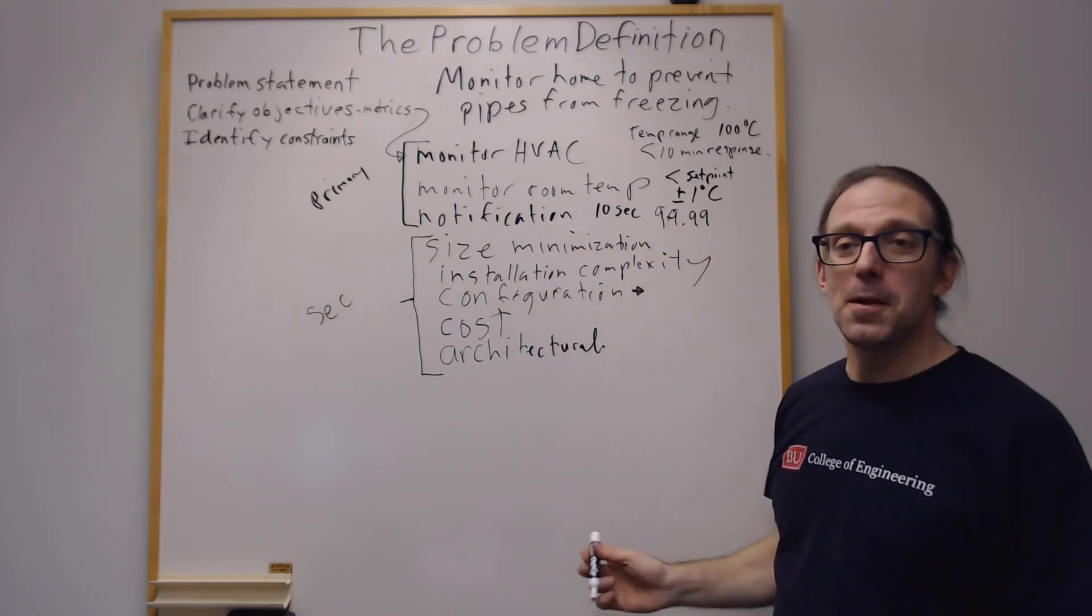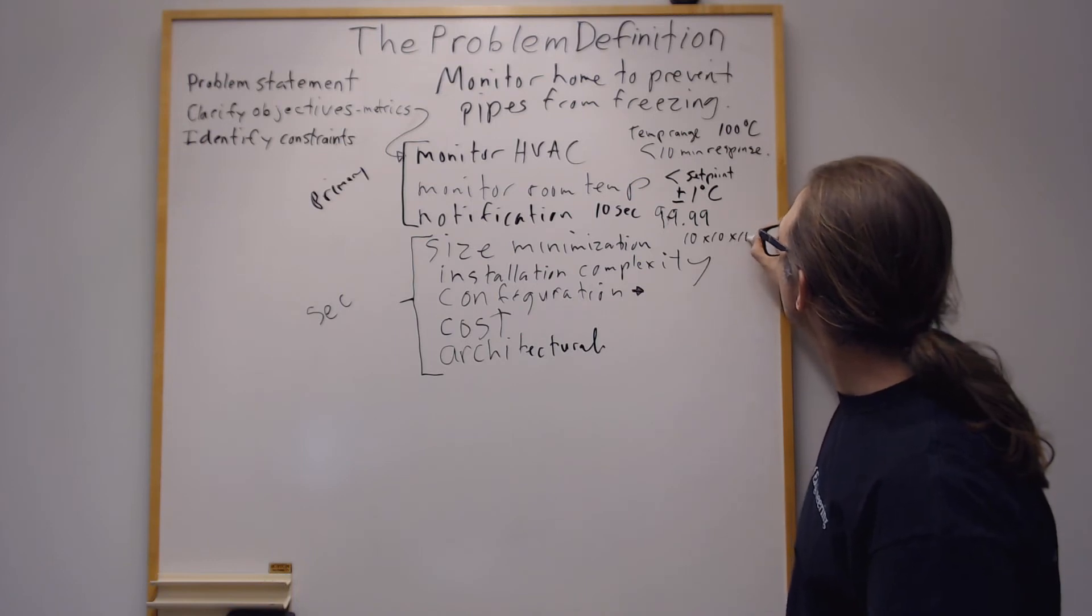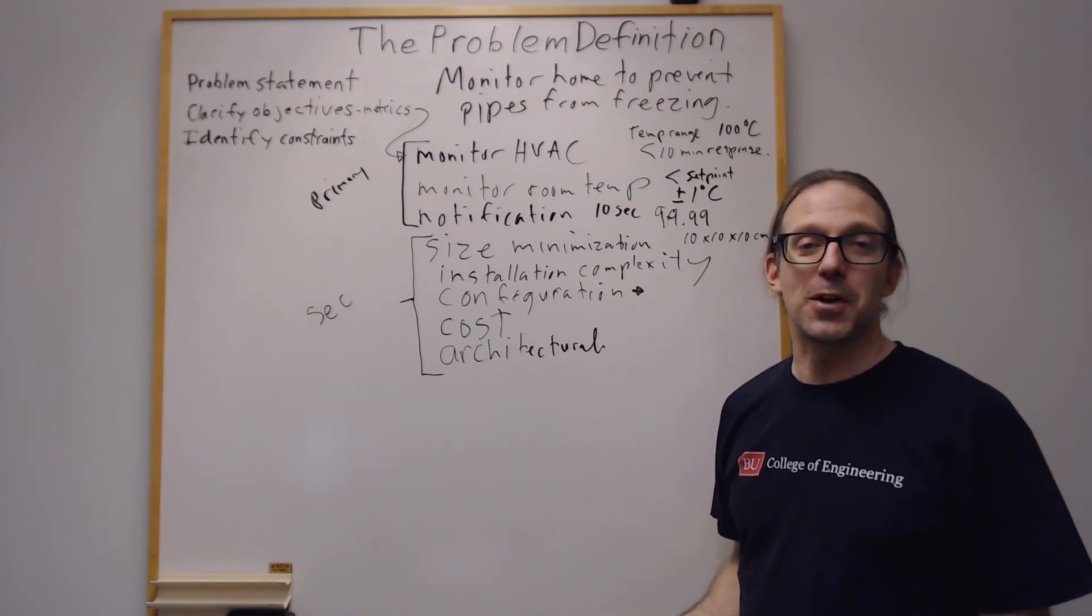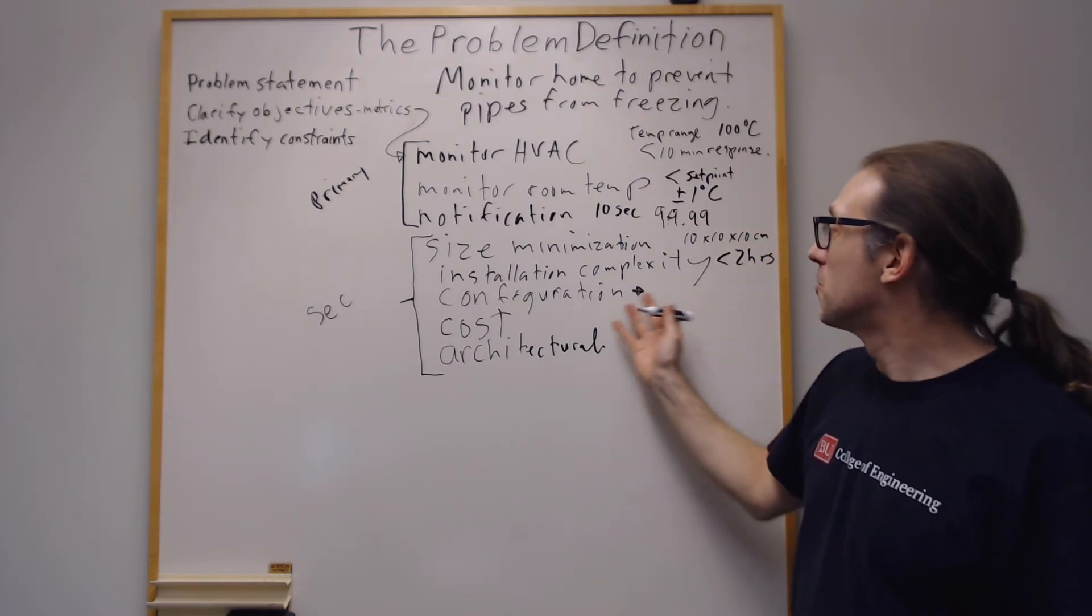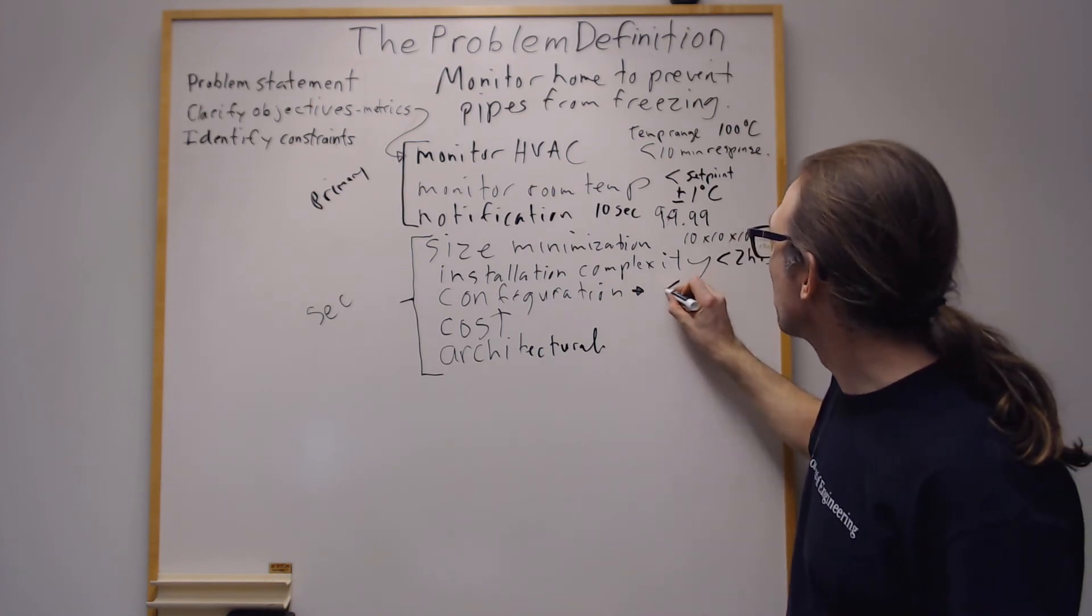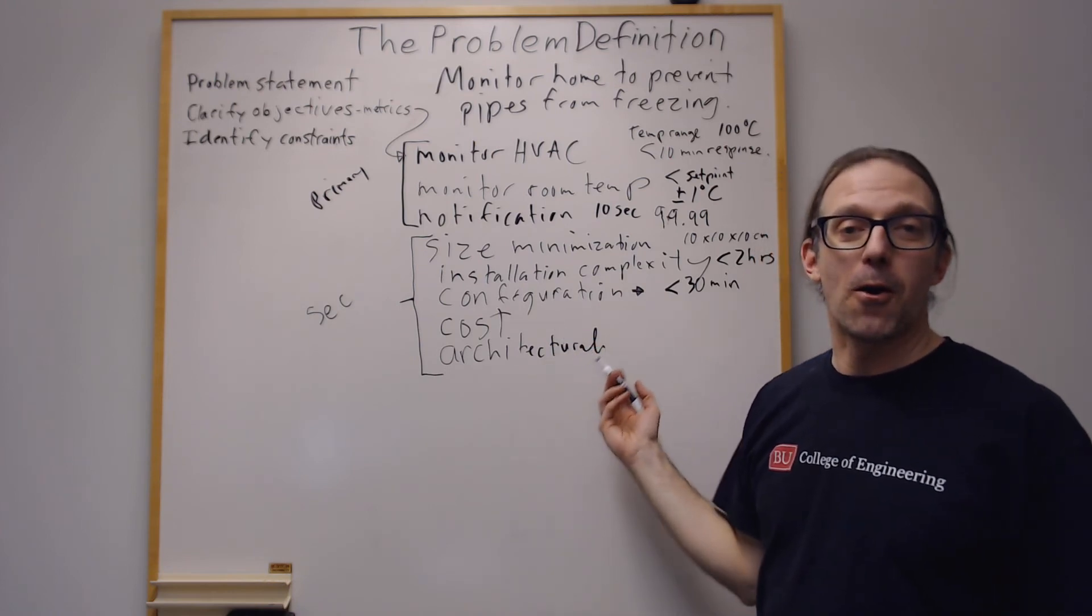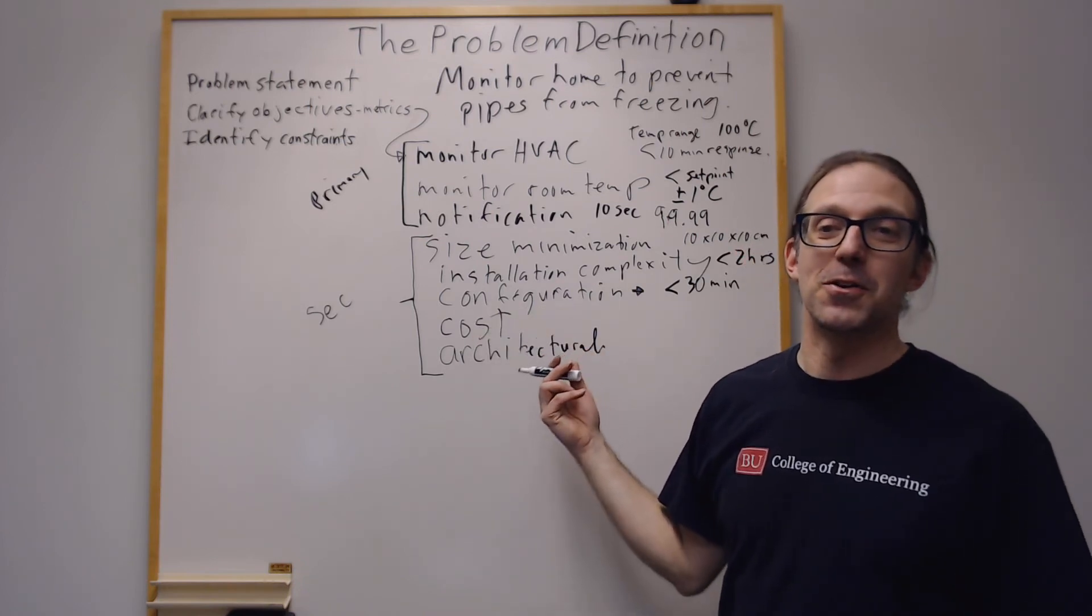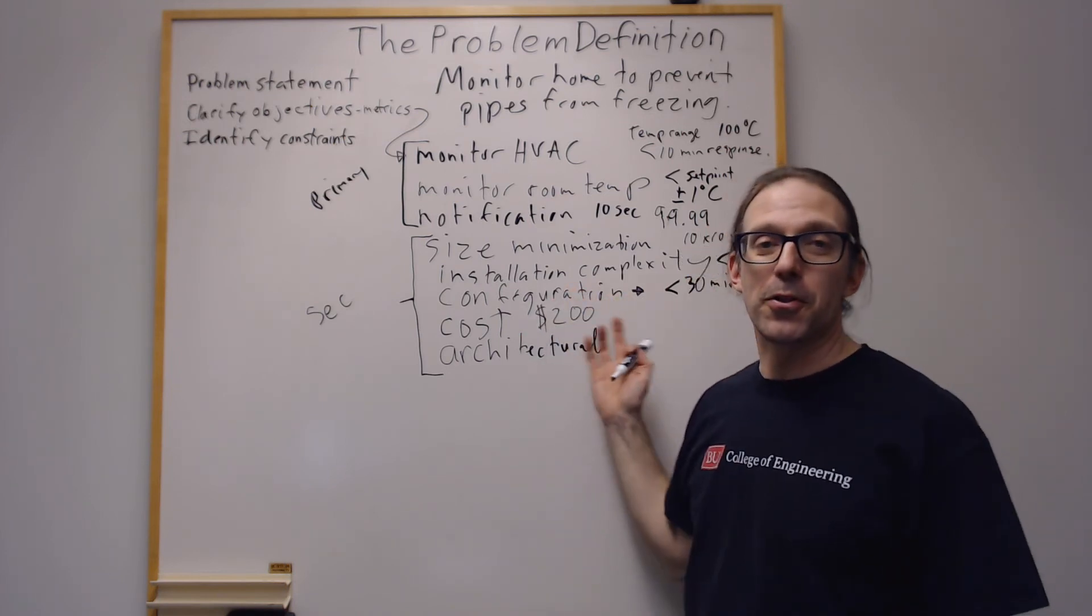So size minimization, maybe we want it to fit on a wall to be a small box. So we could say maybe it's a 10 by 10 by 10 centimeter enclosure. So installation complexity, that would be how long does it take someone skilled in the art. Maybe we want to install in less than two hours. Configuration is also another thing, do we want to be sitting there for eight hours trying to program this? Probably not. So average person would probably want to spend maybe less than 30 minutes on it. And then the cost for our EK 210 projects, we have a constraint of 400 dollars. And that's not necessarily what the production costs of this would be. Maybe we'd say it's 200 dollars just out of the blue.